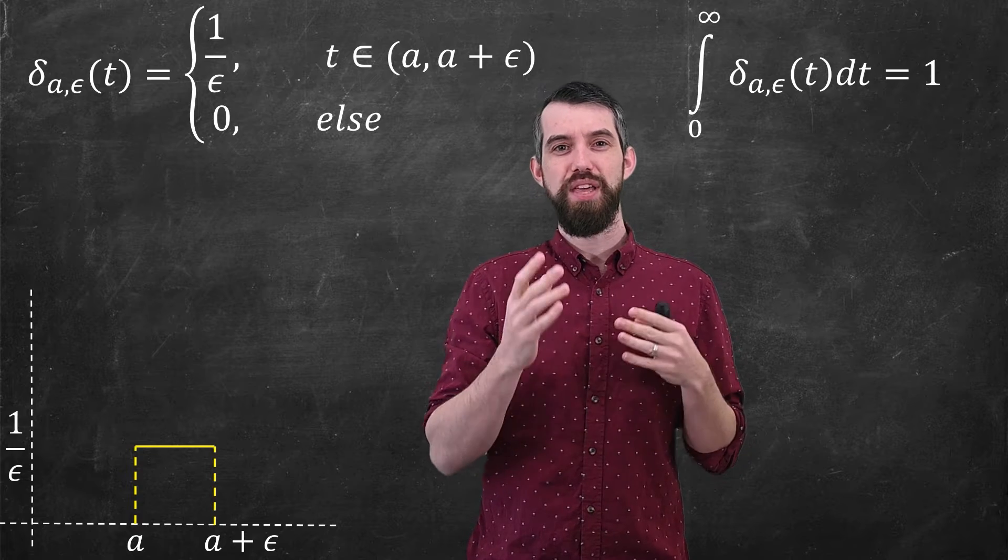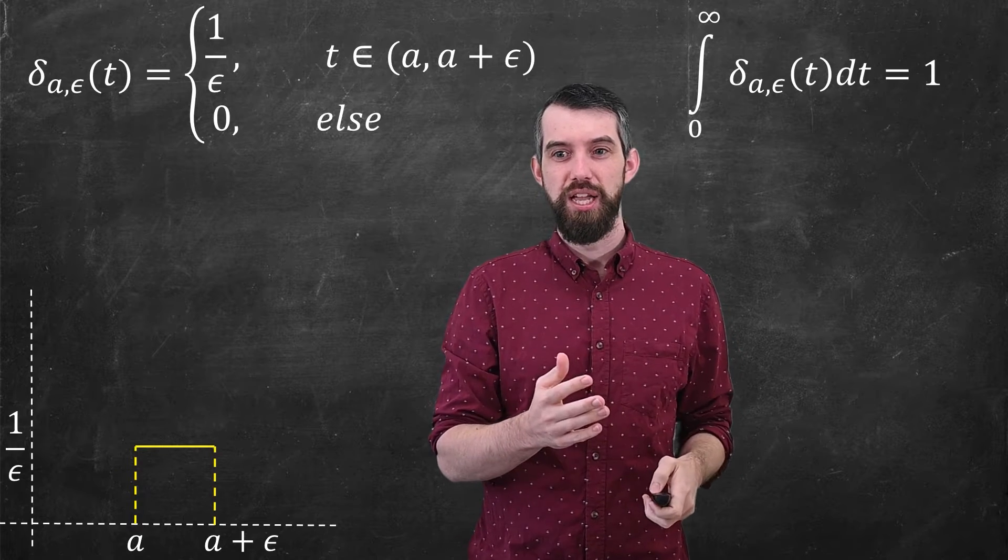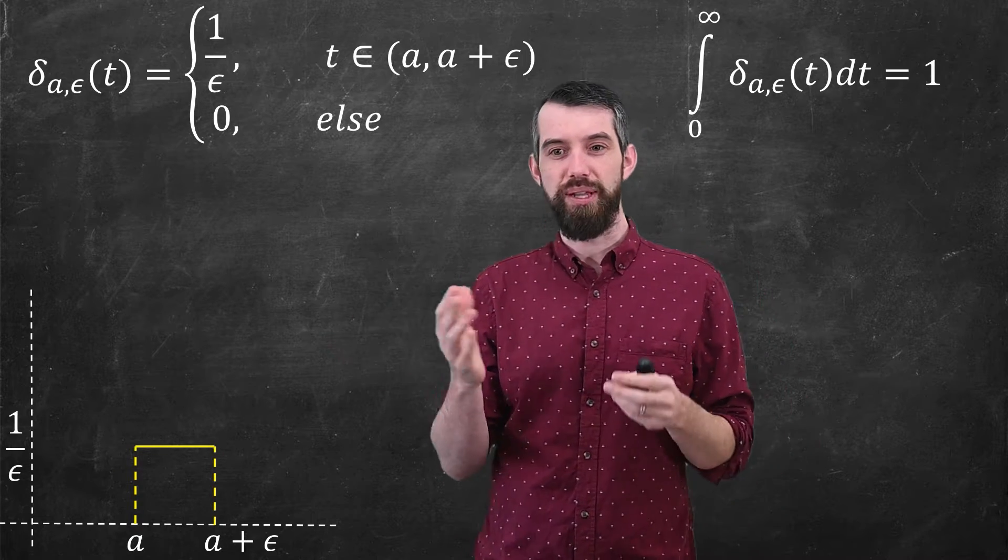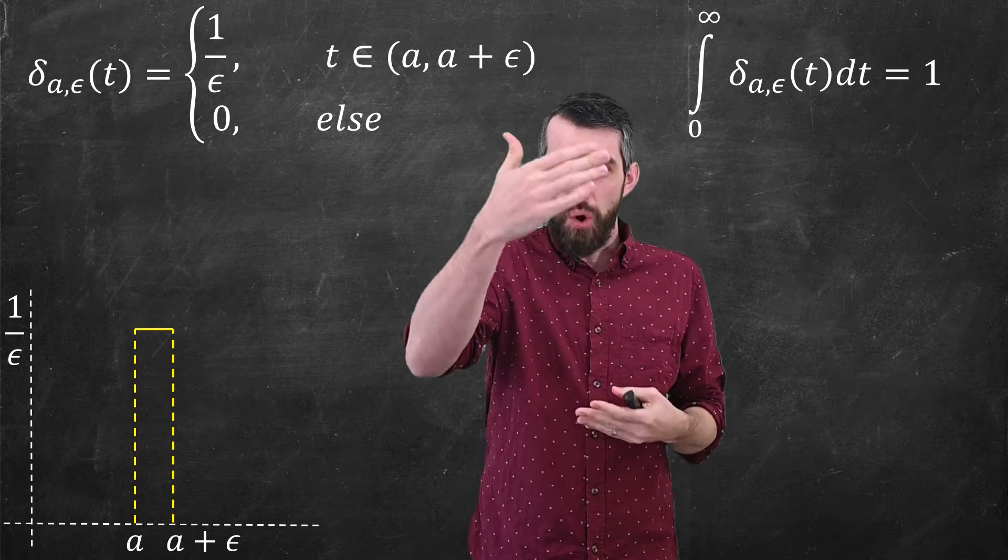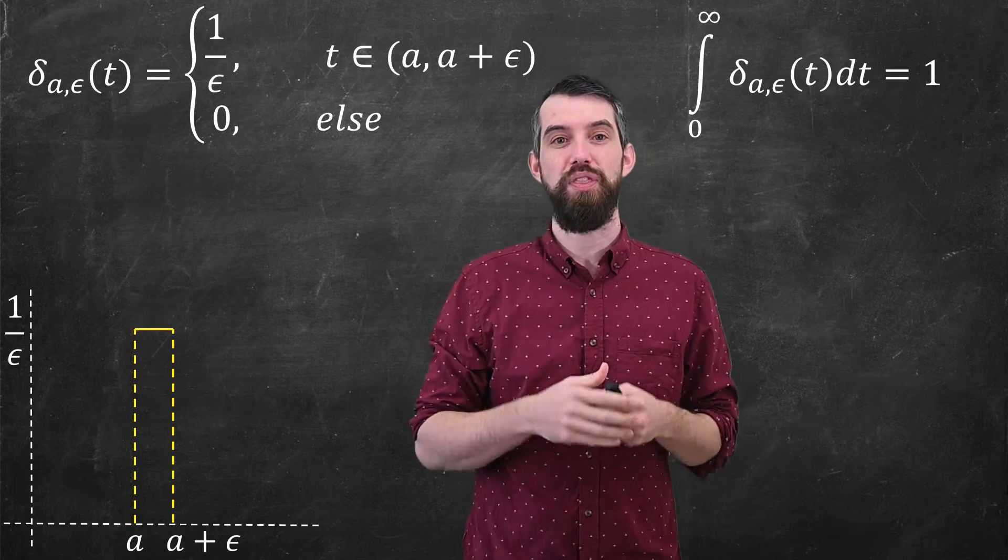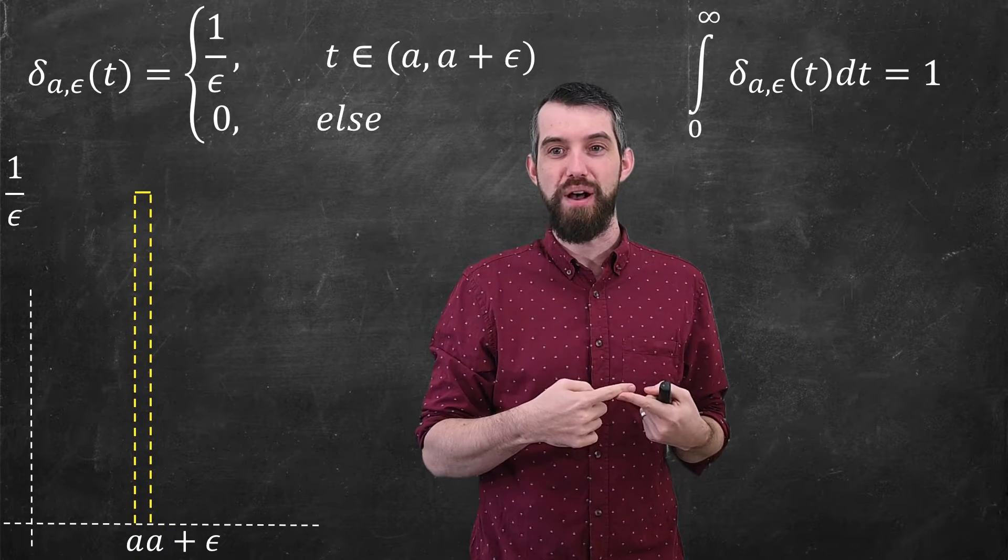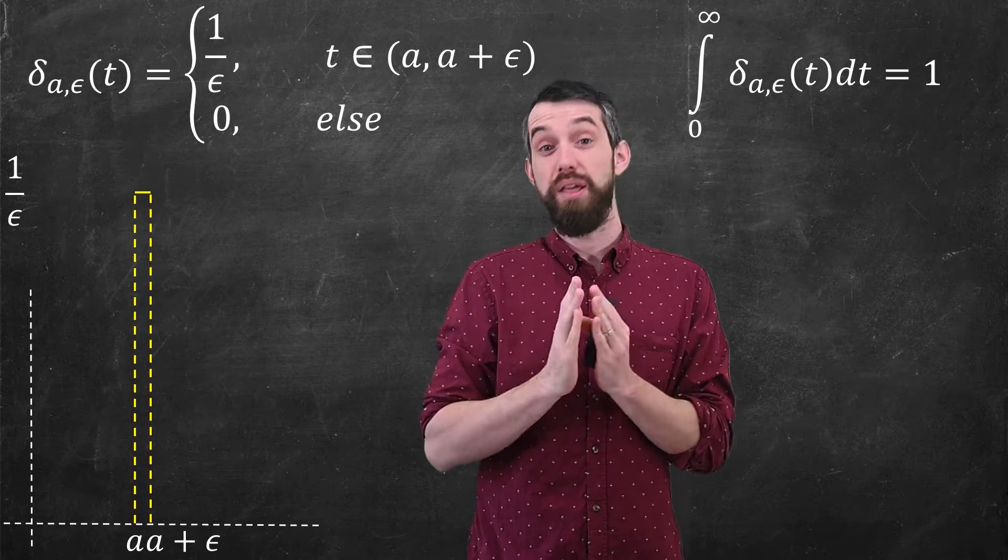Now, I want you to imagine that I let that epsilon change. So, for example, if I shrink it down a little bit, I get something that is narrower and taller, or I could go even more extreme and make epsilon even smaller, and I get a larger but thinner spike.